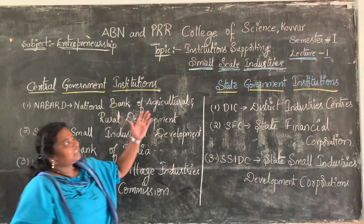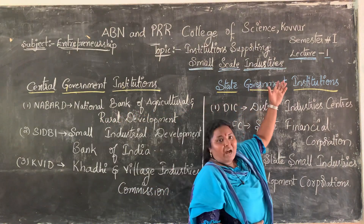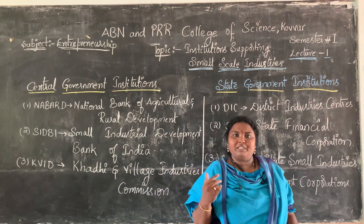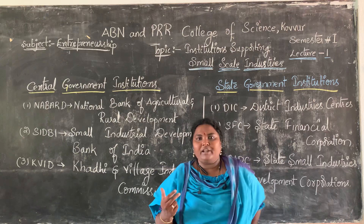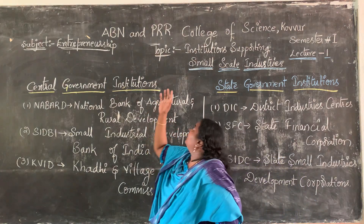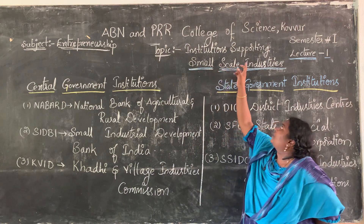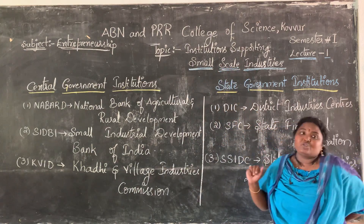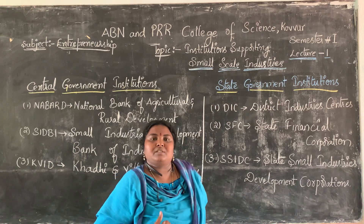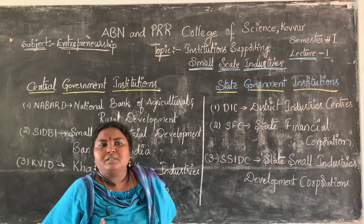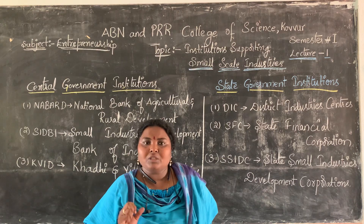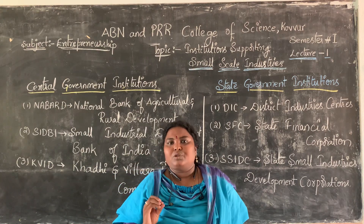This is the first class of our topic of the third unit. Already we have completed the first two units in our offline classes. So the remaining topic is: Institutions Supporting Small Scale Industries. This unit is about what are the institutions that will support the small scale industries.